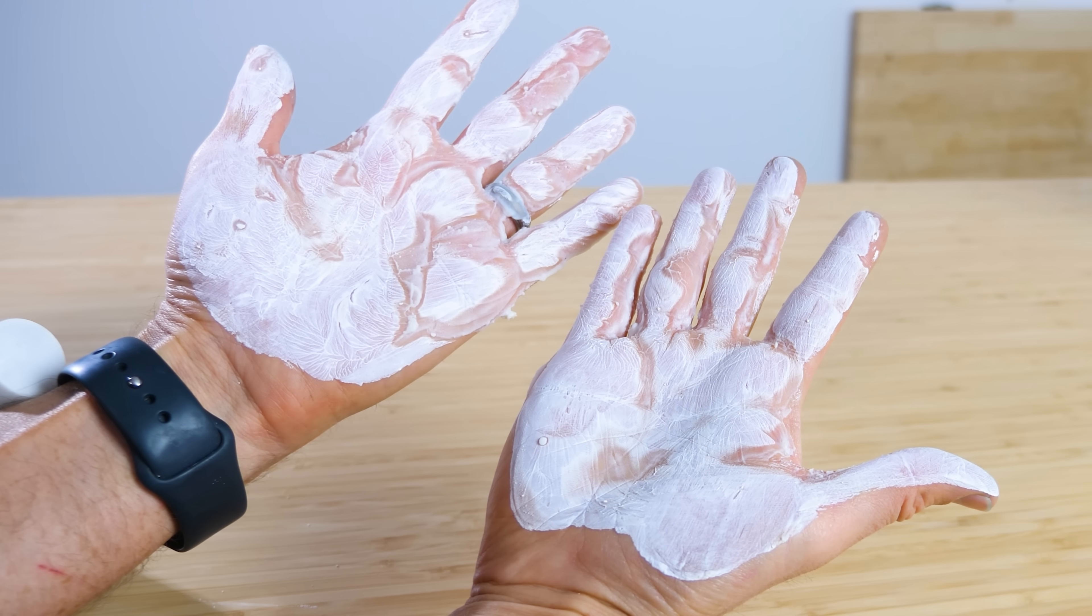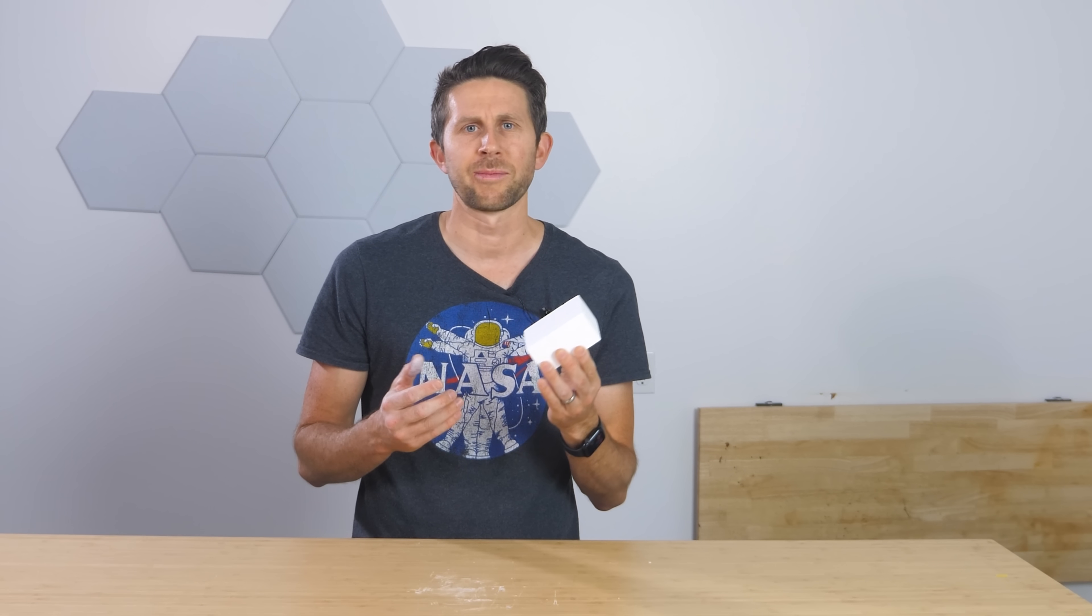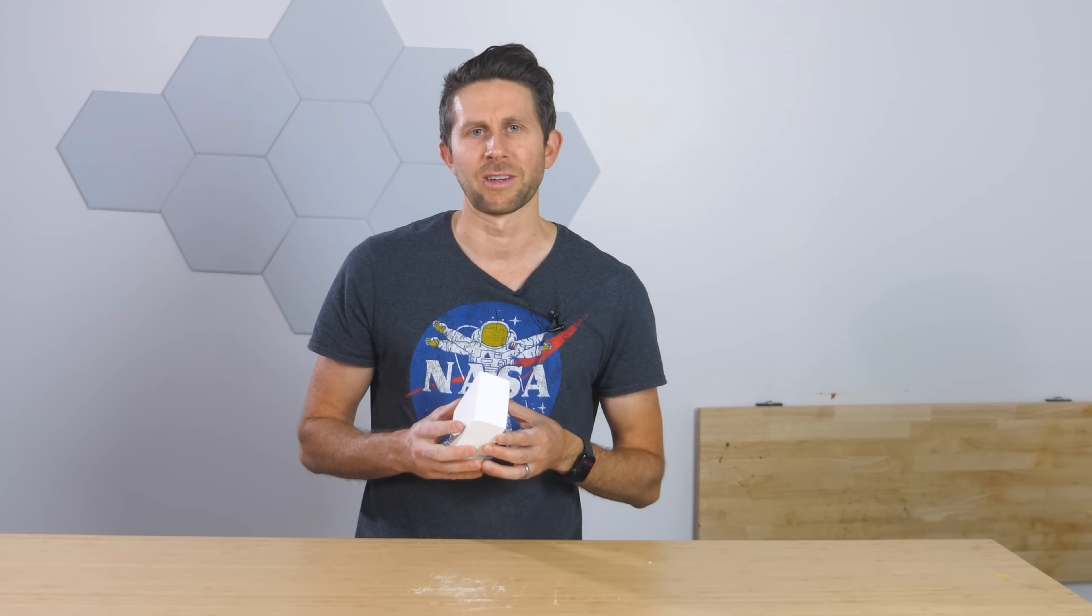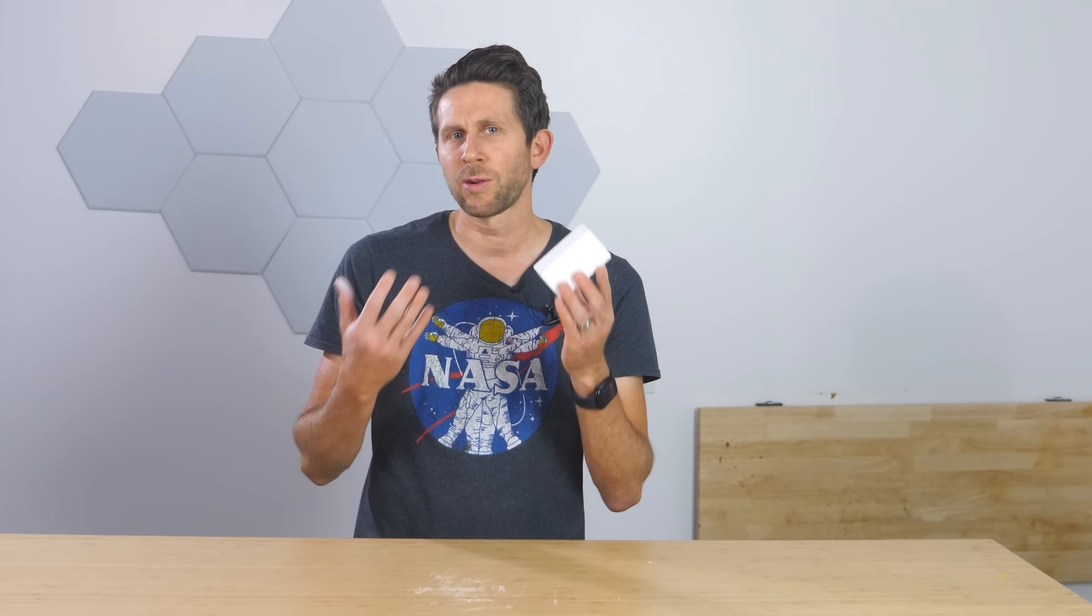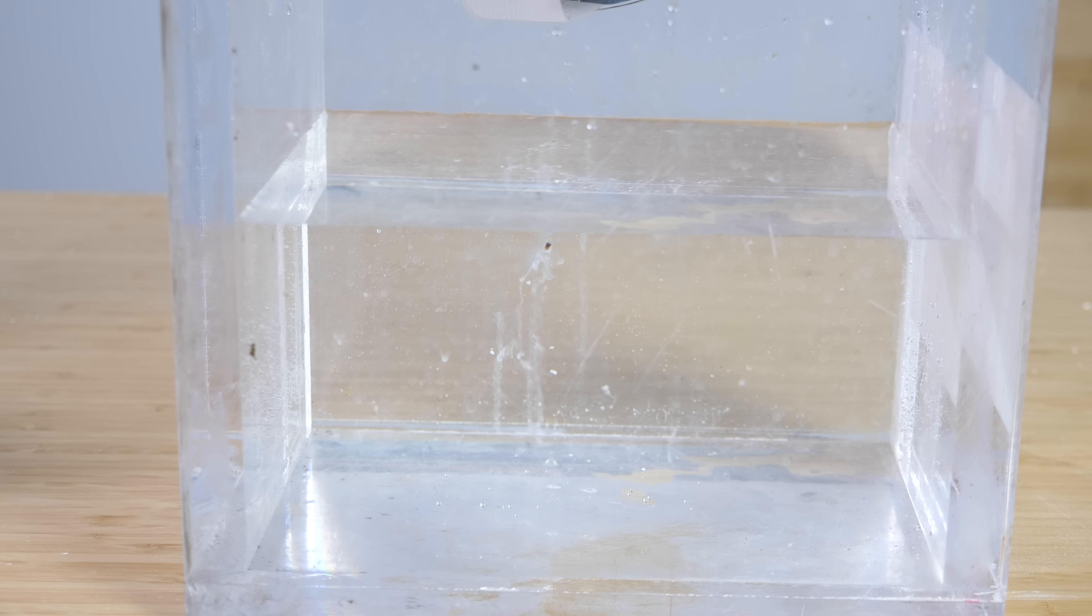Now we know that chalk is thirsty, but let's see if we can make it more thirsty by sucking out the air from the chalk, so the air doesn't have to try to escape as the liquid goes into it. Let's put it in my vacuum chamber and suck out the air, and then quickly drop it in some water afterwards and see if anything changes. Okay, first, here's what it looks like with no vacuum.